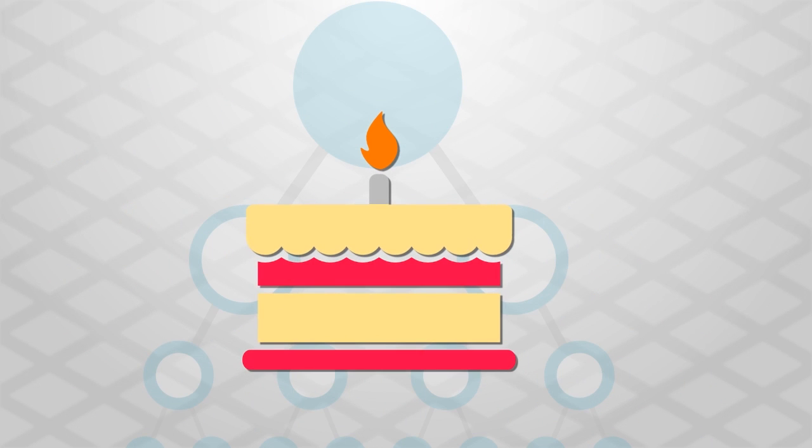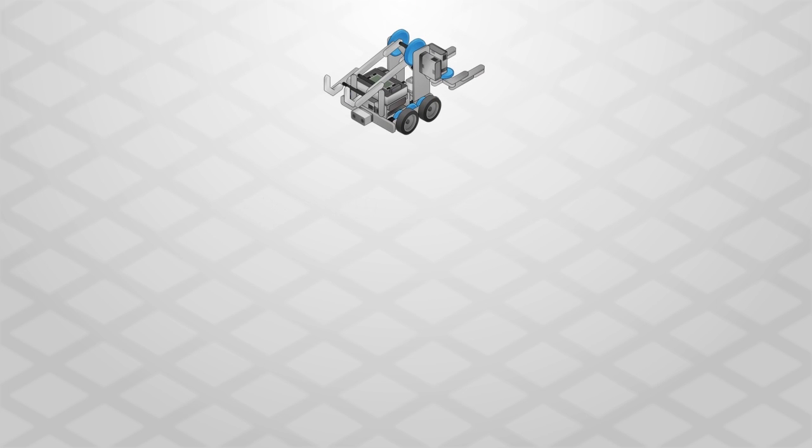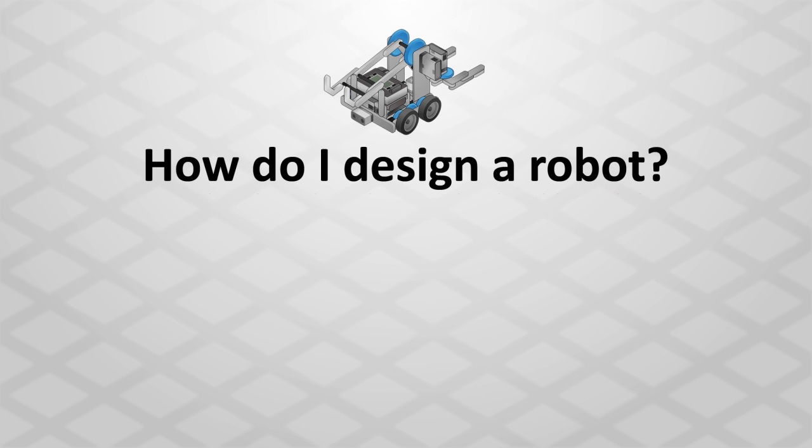You've just reviewed an example of using the decomposition process to plan for making a cake. How can we apply decomposition to building a robot? To decompose this task, you will need to break the big task—how do I design a robot—into a series of smaller tasks.